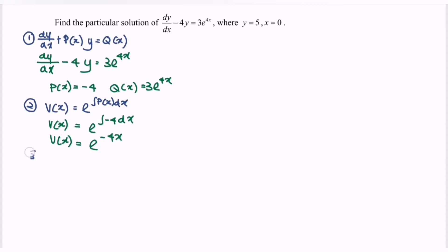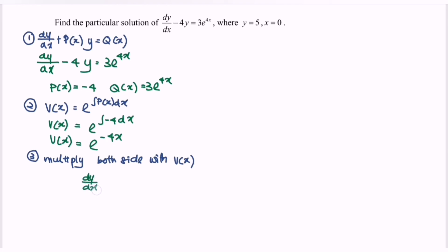Step number three: multiply both sides with v(x), which gives y multiplied with e to the power of negative 4x.